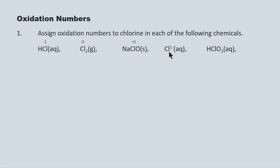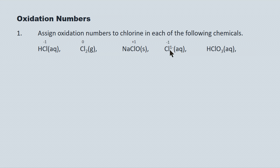For the chloride ion, it's a monatomic ion, so the oxidation number is the same as the ion charge — the ion charge is 1−, so the oxidation number is minus one. Take note: the ion charge is written as number followed by sign, but the oxidation number is sign followed by number. Follow that convention.